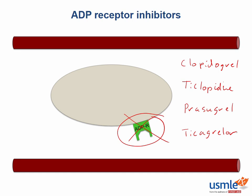So when are these ADP receptor blockers used? They are commonly used in acute coronary syndrome, which includes ST-segment elevation MIs, non-ST-segment elevation MIs, and unstable angina. They are also commonly used in coronary stenting and to decrease the recurrence of thrombotic strokes.